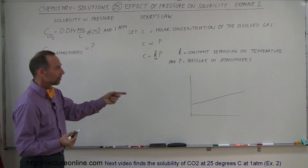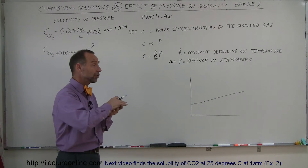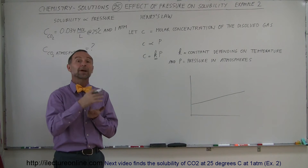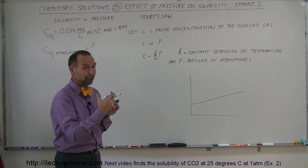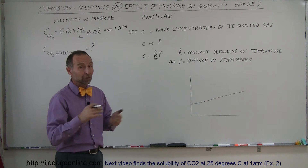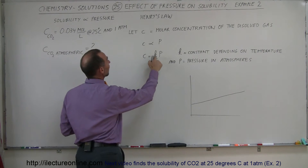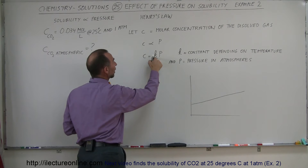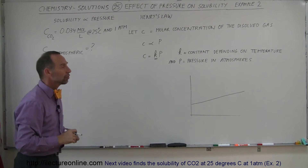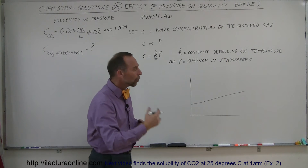Why is this happening? Well, that makes a lot of sense because over the years, the amount of carbon dioxide in the atmosphere has increased. Therefore, the partial pressure of carbon dioxide in the atmosphere has increased, and so the amount of carbon dioxide being dissolved in the oceans is also increasing. Because, as we know, C is equal to K times P — and if P increases, K will be a constant at a particular temperature, so C, the solubility of that gas, will increase as well.